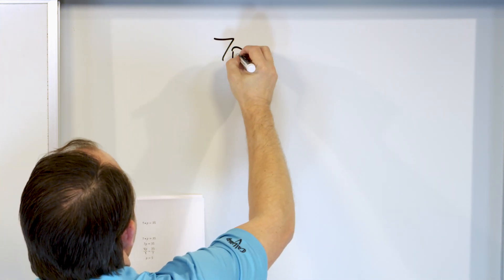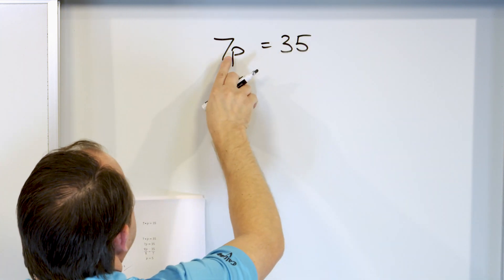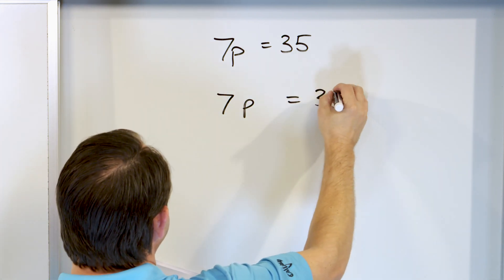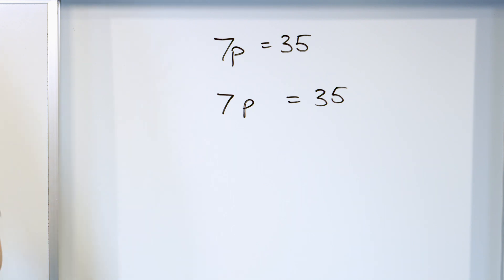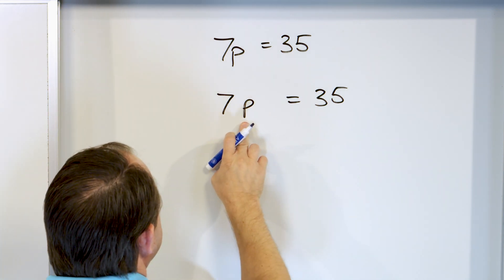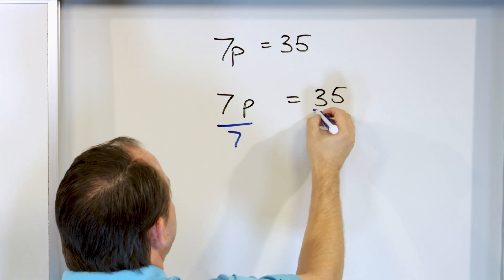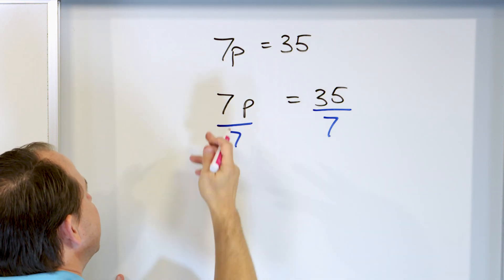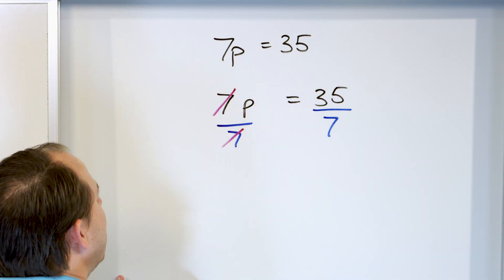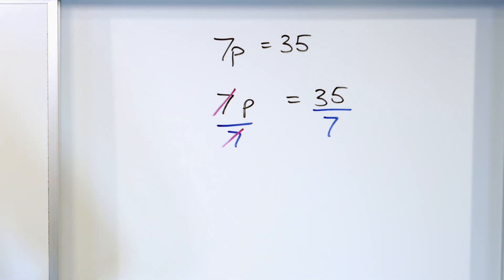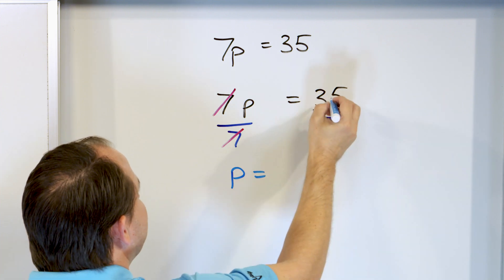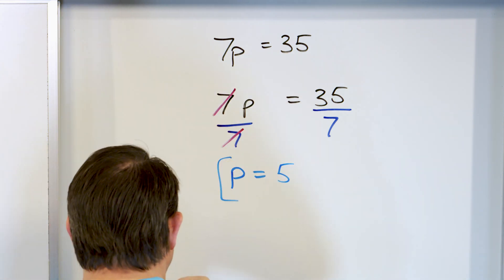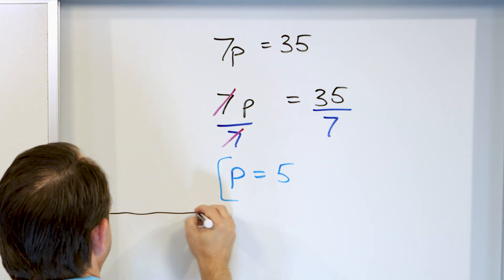What about 7 times p is equal to 35? There's no dot here, but it still means multiplication. Rewrite it: 7p equals 35. We're multiplying by 7, so to undo it we divide by 7 on both sides. We have a 7 on the top and a 7 on the bottom — they divide. 7 divided by 7 is 1, so they disappear, leaving just p. 35 divided by 7 is 5. Check it: 7 times 5 is 35. That's the final answer.